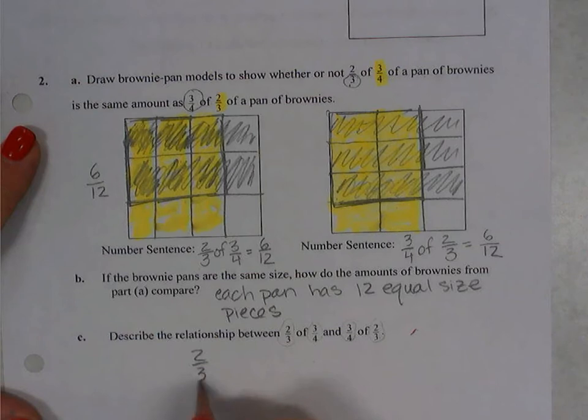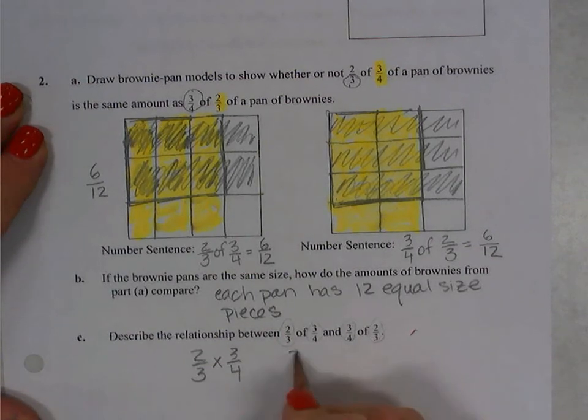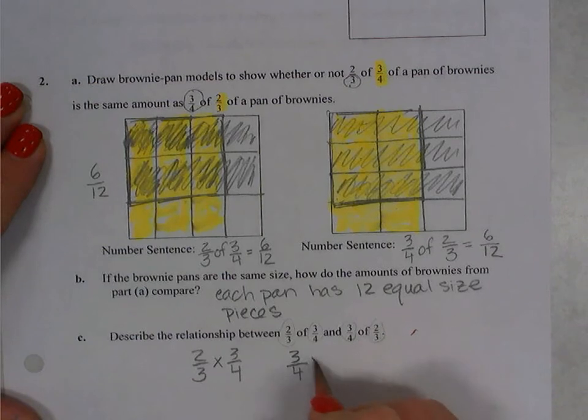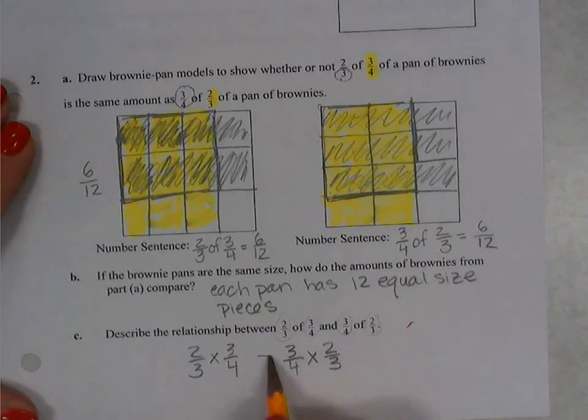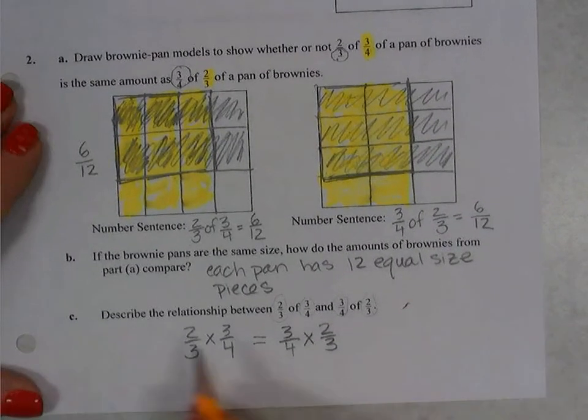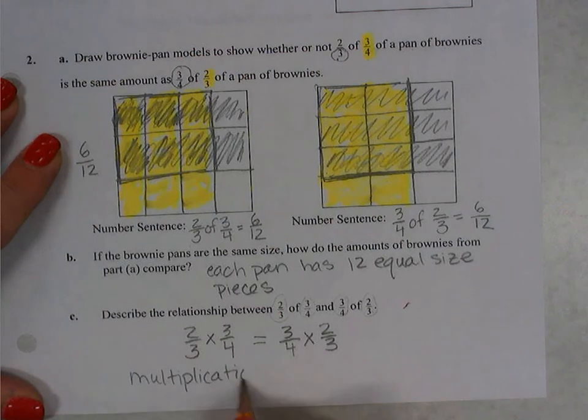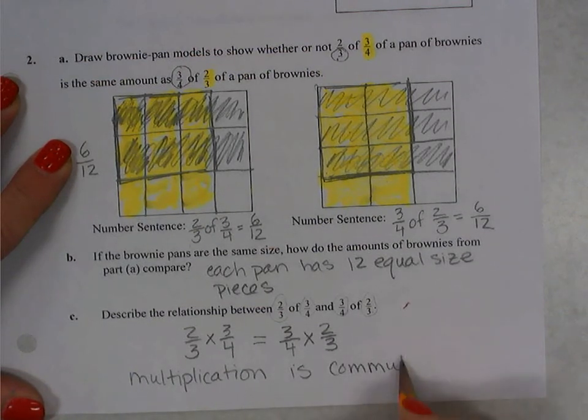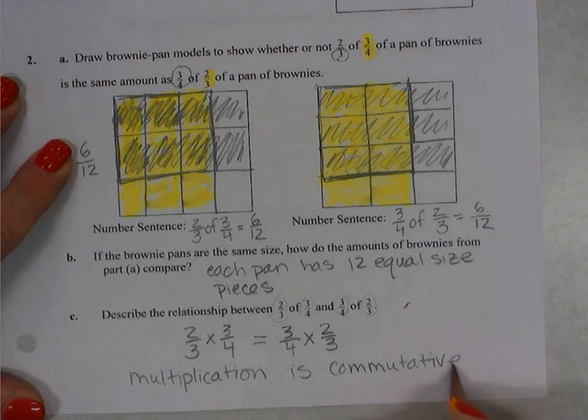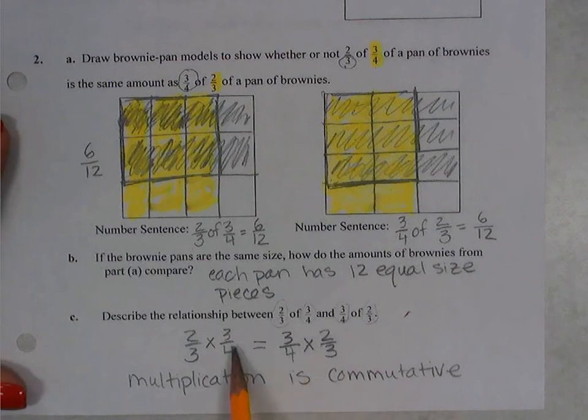So two-thirds of three-fourths is really two-thirds times three-fourths. And three-fourths of two-thirds is three-fourths times two-thirds. We're multiplying. We know these are equivalent. So that tells us that multiplication is what we call commutative. And that is a property that allows us, it doesn't matter what order we multiply in, we will get the same answer.